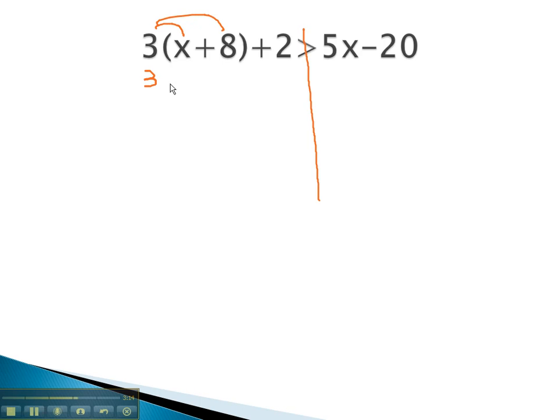This will give us 3x plus 24, plus 2, is greater than 5x minus 20. After distributing, we can combine like terms on the left side, giving us 3x plus 26 is greater than 5x minus 20.